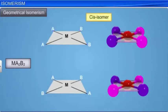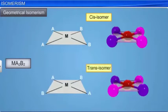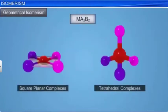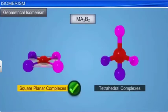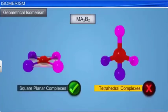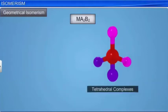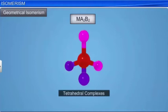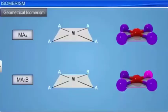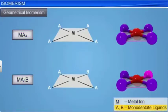It is important to note that only square planar complexes show the phenomenon of geometrical isomerism and not tetrahedral complexes. This is because the relative positions of the unidentate ligands attached to the central metal atom in the tetrahedral geometry are the same with respect to each other. In square planar complexes, compounds with the general formula MA₄ and MA₃B do not show geometrical isomerism. Here, M is a metal ion, while A and B are monodentate ligands.